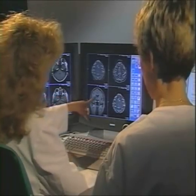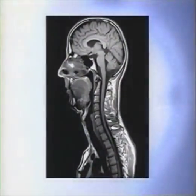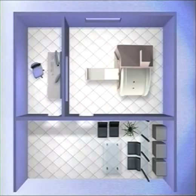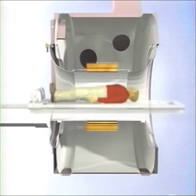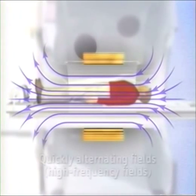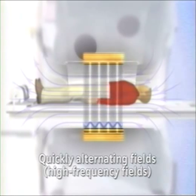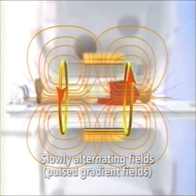A computer program analyzes the MR signals and generates an image of the distribution of the hydrogen atomic nuclei in the human body. The MR unit is housed in an RF enclosure. This ensures that the very weak signals from the RF pulses are not contaminated with interference and cannot cause radio interference outside the enclosure. Therefore, the patient is exposed to three different magnetic fields during the MR examination: the static main magnetic field that aligns the atomic nuclei; the high-frequency alternating field that disrupts the alignment; and the pulsed gradient field that enables correlation of the MR signals to the location of origination.